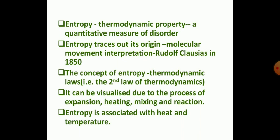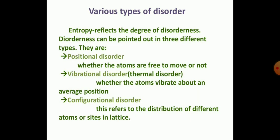Entropy is associated with heat and temperature. Entropy reflects the degree of disorderedness, which can be of three different types: positional disorder, whenever atoms are free to move; vibrational disorder, whenever atoms vibrate about an average position; and configurational disorder, which refers to the distribution of different atoms on the sites of a lattice.